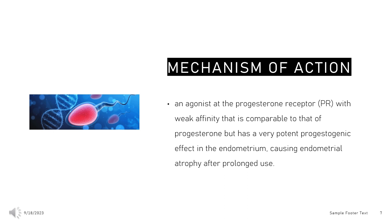Mechanism of Action: Dienogest acts as an agonist at the progesterone receptor (PR), with weak affinity comparable to that of progesterone, but has a very potent progestogenic effect in the endometrium, causing endometrial atrophy after prolonged use. It promotes antiproliferative, immunologic, and antiangiogenic effects on endometrial tissue. Dienogest reduces endogenous production of estradiol, thereby suppressing the trophic effects of estradiol on both the eutopic and ectopic endometrium.